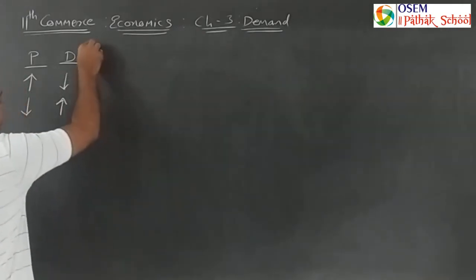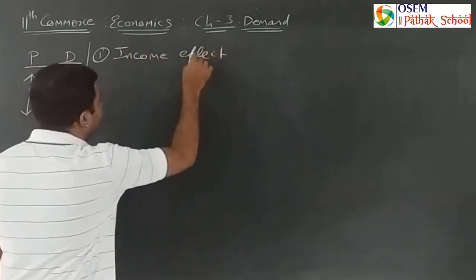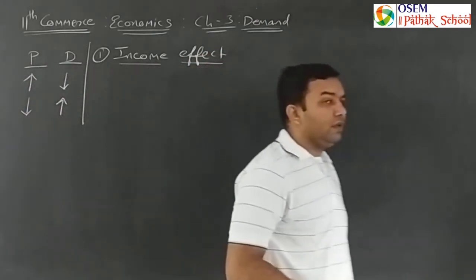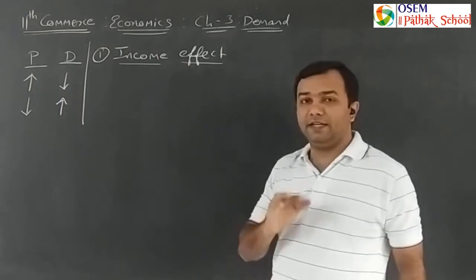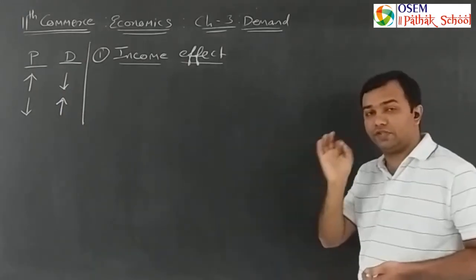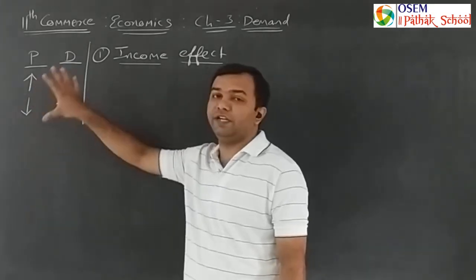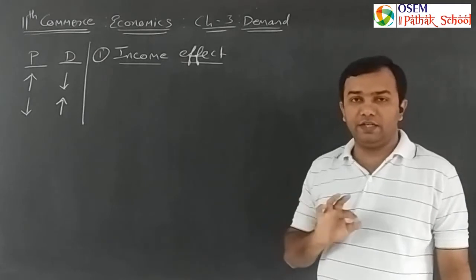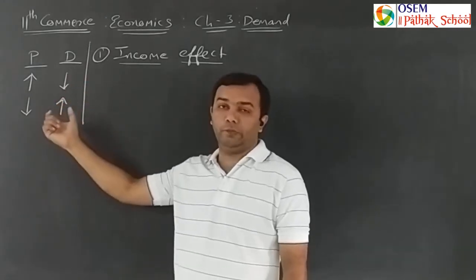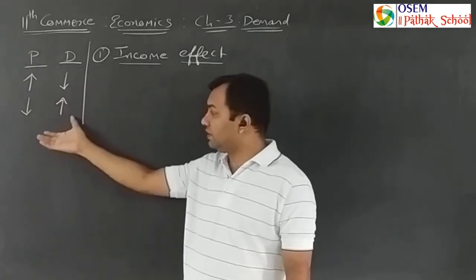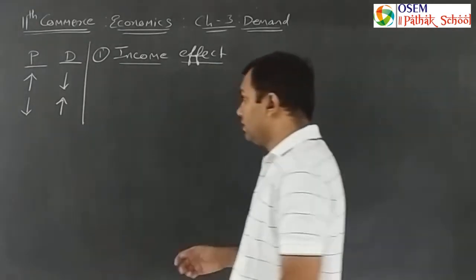The first reason is the income effect. When people see that other things remain constant and price changes, it affects their real purchasing power. One of the main reasons for the inverse relationship is this income effect. Let's look at an example.